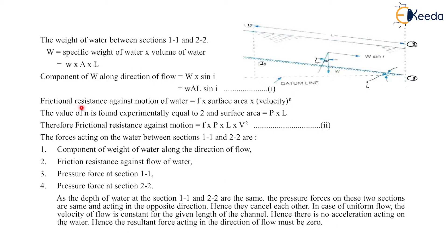Now frictional resistance against motion of water will be equals to F into surface area into velocity to the power N. The value of N is found experimentally to be equals to 2, and surface area will be equals to P into L. Therefore frictional resistance against motion will be equals to F·P·L·V², which is the second equation.